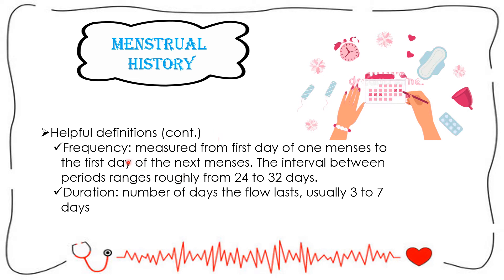For the menstrual history, frequency is measured from the first day of one menses to the first day of the next, with the interval between periods ranging roughly from 24 to 32 days. Duration refers to the number of days the flow lasts, usually three to seven days.